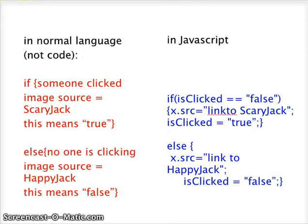Now, that was the first half of our function. For the other half: else means no one is currently clicking, so make the image source Happy Jack. Since no one is clicking, this value is false. Now you can pause and compare how these things make sense both in normal language and in JavaScript.